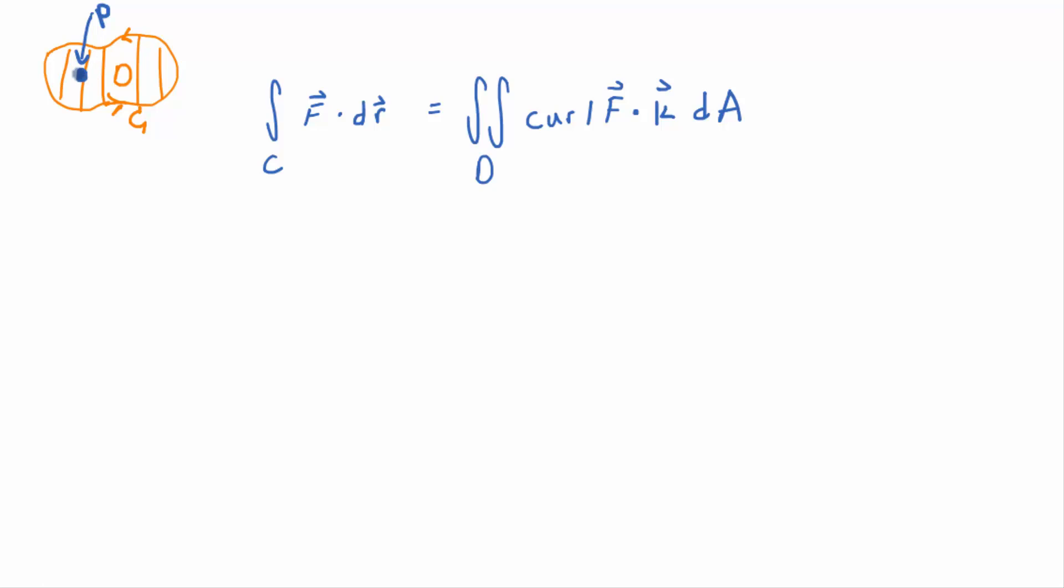Then, as long as that region D is super small, F won't change much. The values of the vector field won't vary much over that region. Would you buy that statement?